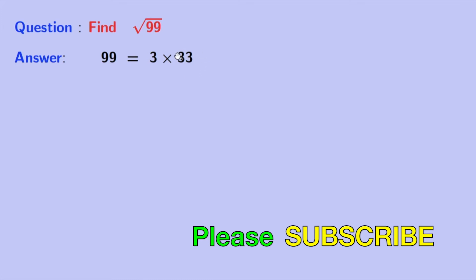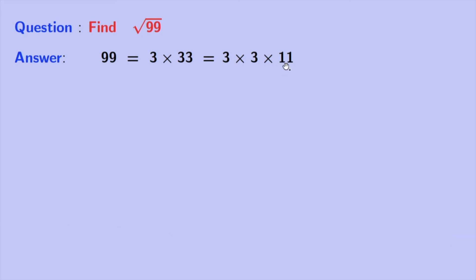33 is also divisible by 3, and we can easily write it as 3 times 11. So we have 99 equal to 3 times 3 times 11. And you look that 11 is a prime number, so we cannot decompose it further.